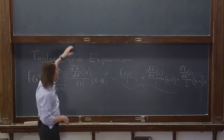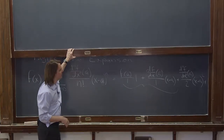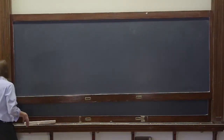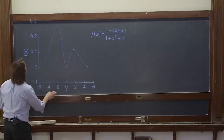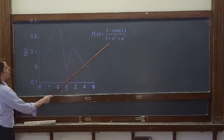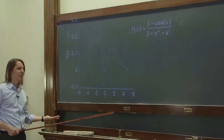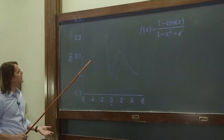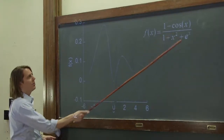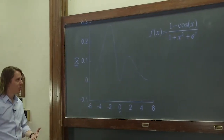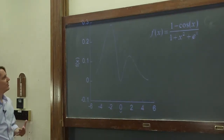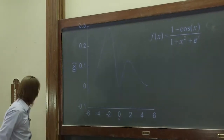Let me show you what it looks like when you really do this. I've plotted a crazy function: 1 minus cosine x, over 1 plus x squared times e to the x. This is one of my hobbies — I just make up functions. This function has sort of a double hump, very complicated and very nonlinear. It would be a really hard differential equation if you equated it to mx double dot. So what we're going to do is pick a couple of points and expand to show how we can linearize this around different points.